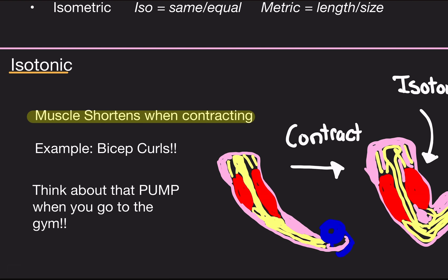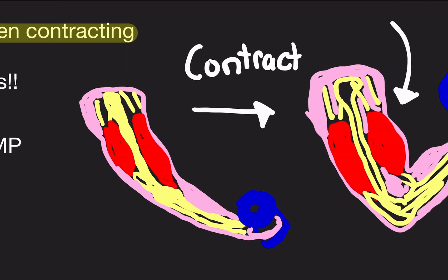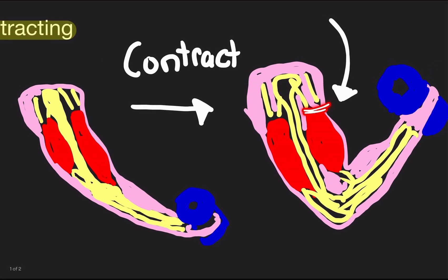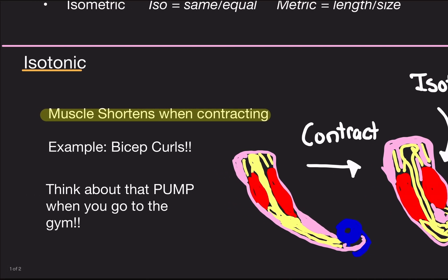Isotonic contractions — what does this mean? An isotonic contraction is when the muscle is shortening during the contraction. The best example I can think of is bicep curls. When you go to the gym and pick up a dumbbell, before you start curling it, your bicep is this length. Then you contract it, you lift up the dumbbell, and your muscle actually shortens in length. That's why you notice that little pump — it gets bigger and bulges out. That is an isotonic contraction.